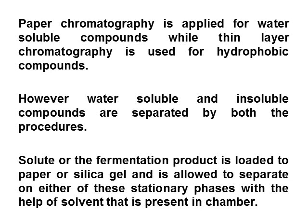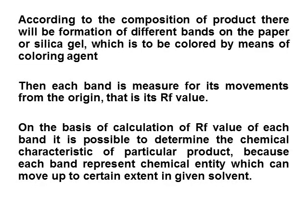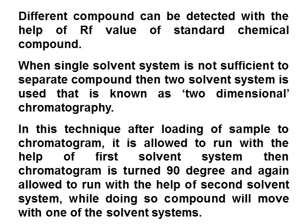According to the composition of the product, different bands form on the paper or silica gel, which are colored by means of a coloring agent. Each band is measured for its movement from the origin — that is, its Rf value. Based on calculation of the Rf value of each band, it is possible to determine the chemical characteristics of a particular product, because each band represents a chemical entity that can move to a certain extent in a given solvent. Once the organic acid is separated from the medium, it is analyzed by titration using a pH-indicator dye such as bromothymol blue, followed by titration with alkali of known strength. If electrometric titrations are used, the dye is not used. If the product is insoluble, it is precipitated, washed, dried, and weighed — that is gravimetric analysis.